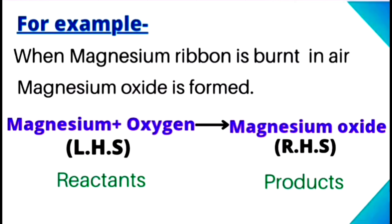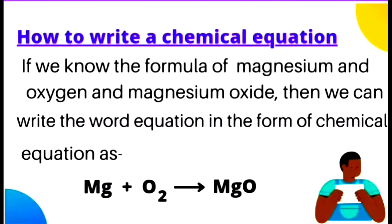For example, when magnesium ribbon is burnt in air, magnesium oxide is formed. Jab magnesium ribbon ko air mein burnt kiya jata hai toh magnesium oxide ki formation hoti hai. Isse represent kiya jata hai: left hand side mein likha hai magnesium plus oxygen, aur arrow ke right hand side mein likha hai magnesium oxide. Jo bhi left hand side par hote hain unko reactants kaha jata hai, aur right hand side mein jo product nikalta hai use products kaha jata hai. Yeh word form mein chemical equation hai.